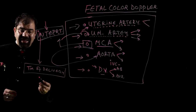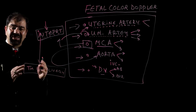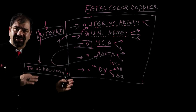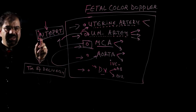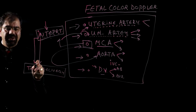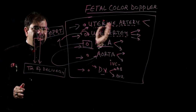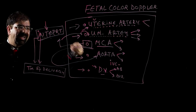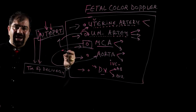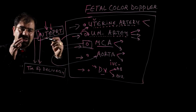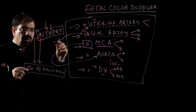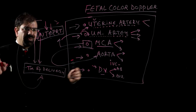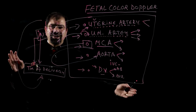The timing of delivery — when I can say this fetus can be safe for one week, or when this fetus will be lost in the next two or three days — is possible only when I know the interpretation. We will cover everything starting from the basics: how to take the uterine artery, what is normal, what is abnormal, how to correlate, and finally the timing of delivery before losing a fetus. That is what we will take in the fetal color Doppler course.